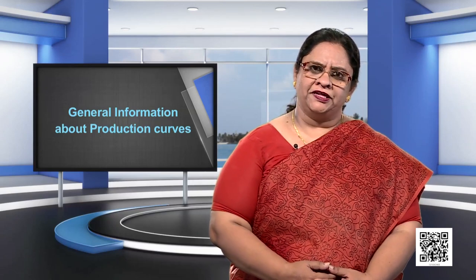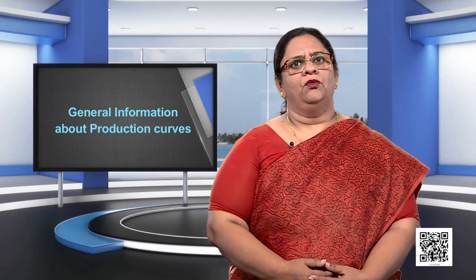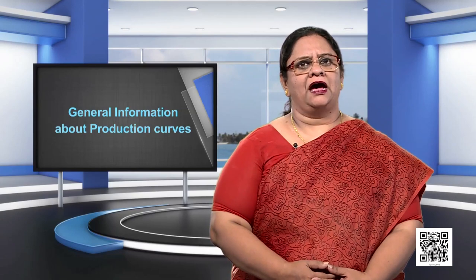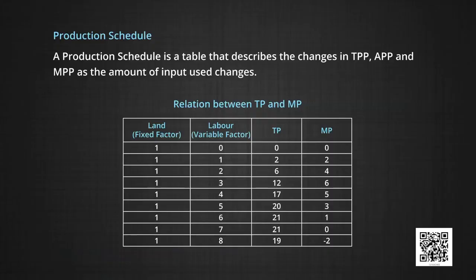It is the marginal physical product that acts as a driver for the average physical product, since the rate of change in marginal physical product will directly affect the average physical product. If the marginal physical product is more than the average physical product, it will pull up the APP. If it is less than the average physical product, then the APP falls. When the average physical product is maximum, the average physical product and the marginal physical product are equal. A production schedule is a table that describes the changes in the total physical product, the average physical product, and the marginal physical product as the amount of the input used changes. The diagrammatic representation of these variables gives us the TPP curve, the APP curve, and the MPP curve.